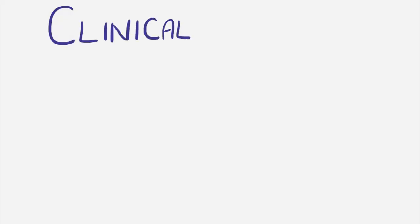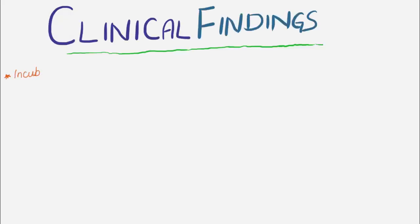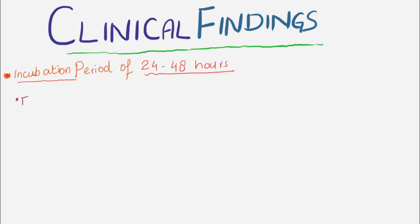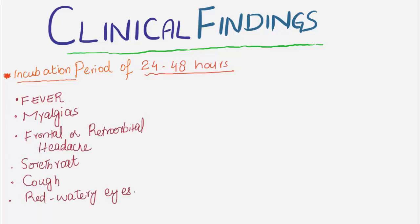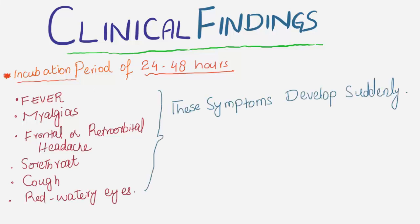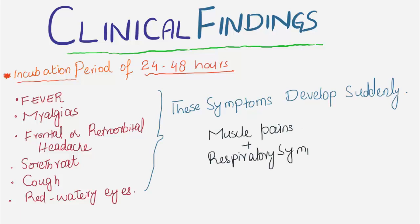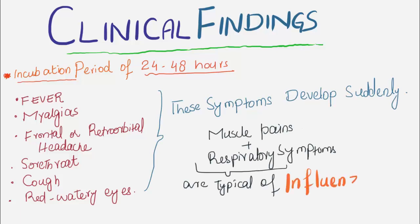Clinical Findings of Flu: After an incubation period of 24 to 48 hours, it causes fever, myalgias, frontal or retroorbital headache, sore throat, cough, and red watery eyes. These symptoms develop suddenly. Muscle pains and respiratory tract symptoms are typical of influenza.